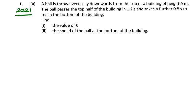This is the 2021 question 1a. The ball is thrown vertically downwards, so we have acceleration as positive g, from the top of a building of height h. Here's my building, height h.